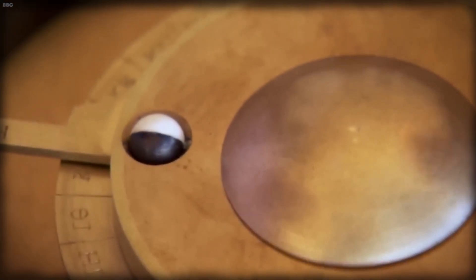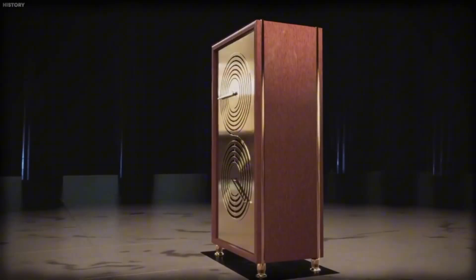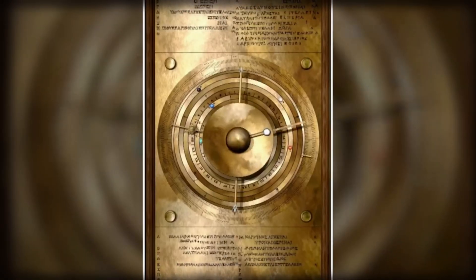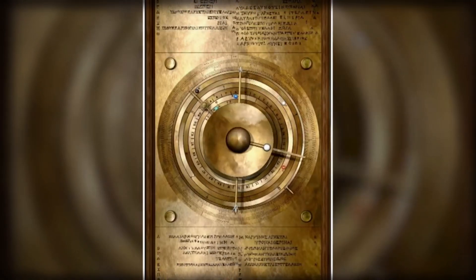Each small box along the spiral contained symbols and Greek letters marking lunar or solar eclipses. The hour they'd occur, even the color the sky might take. It was precise, elegant, unbelievable. Historians now realized they were looking at something 2,000 years ahead of its time. An analog computer, capable of calculating celestial events with astonishing accuracy.